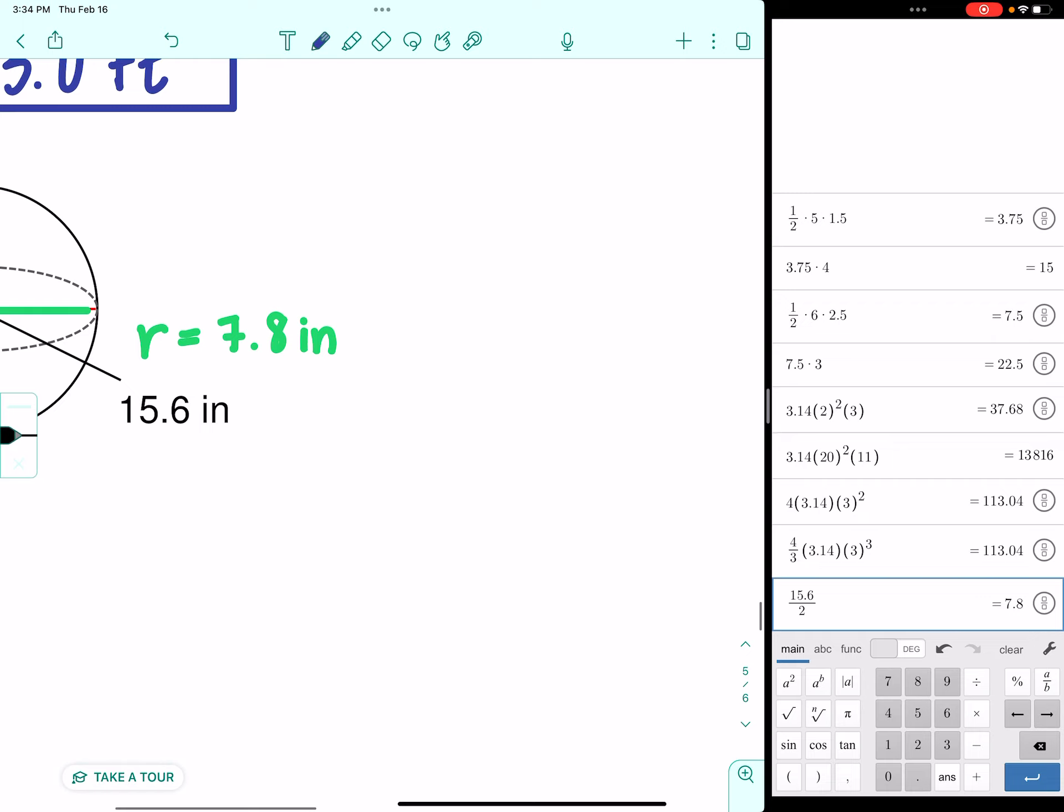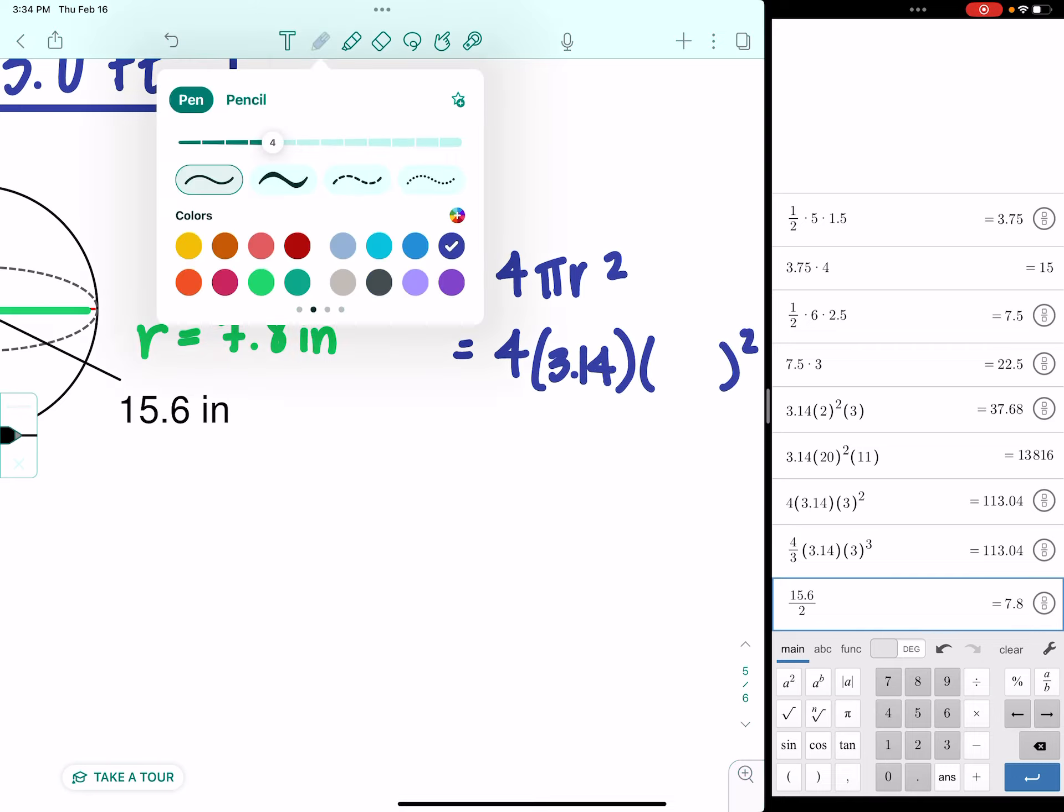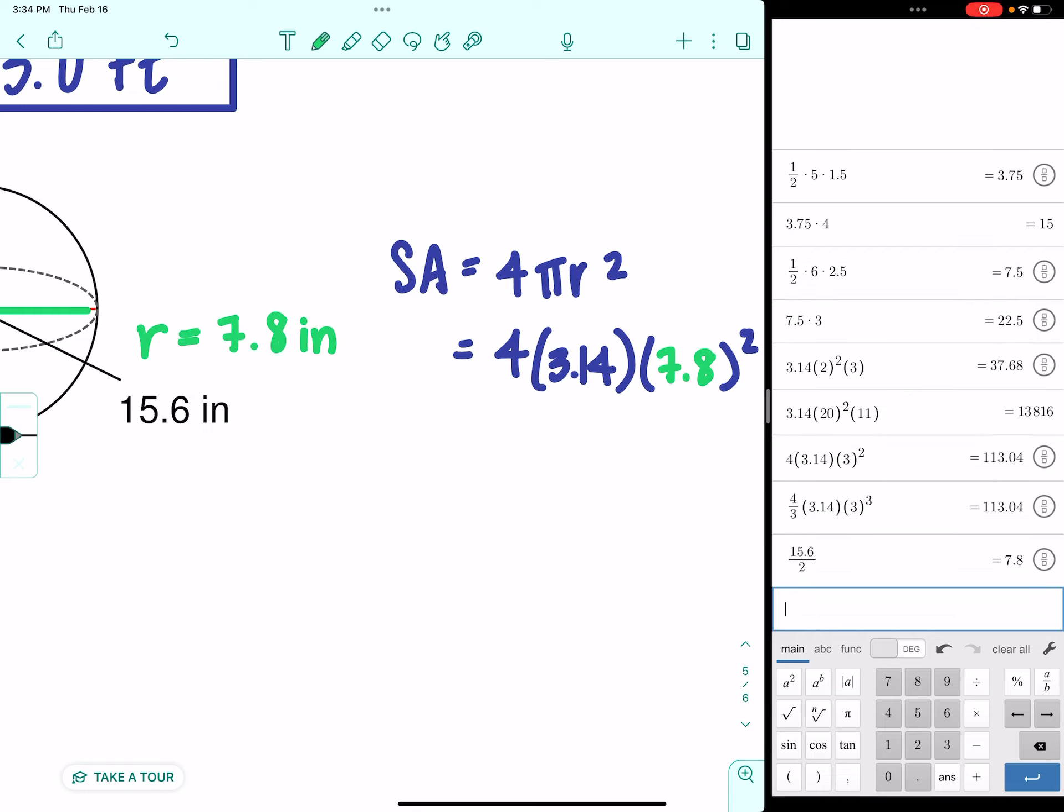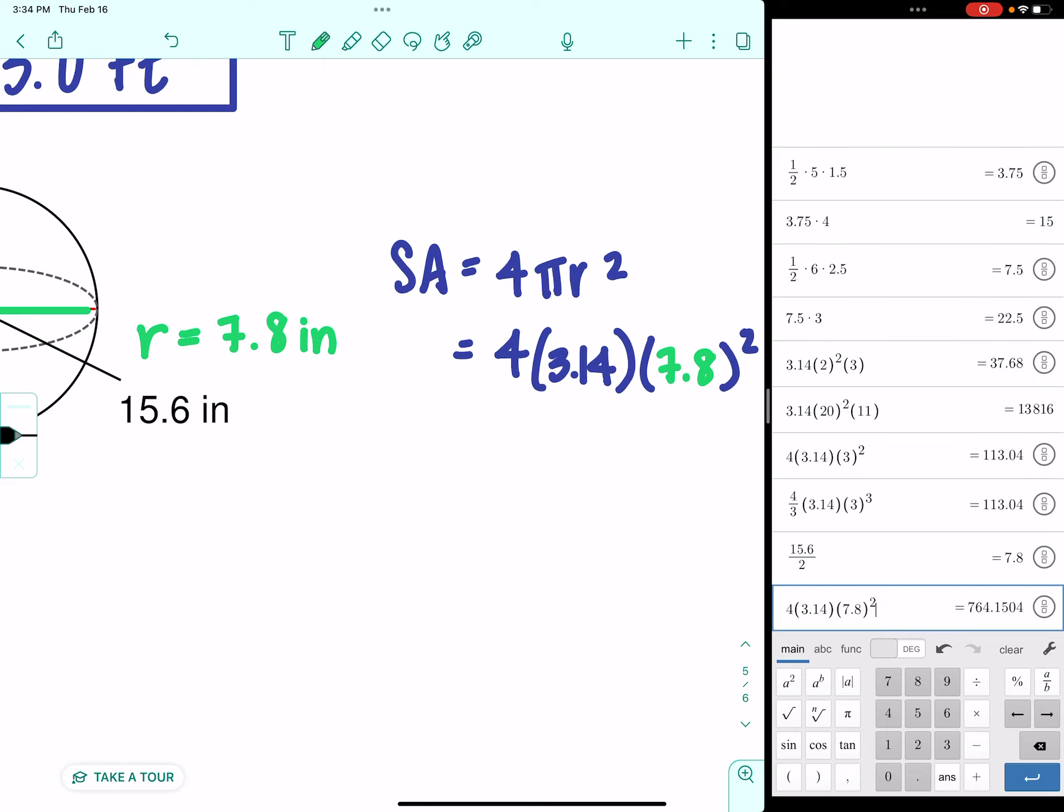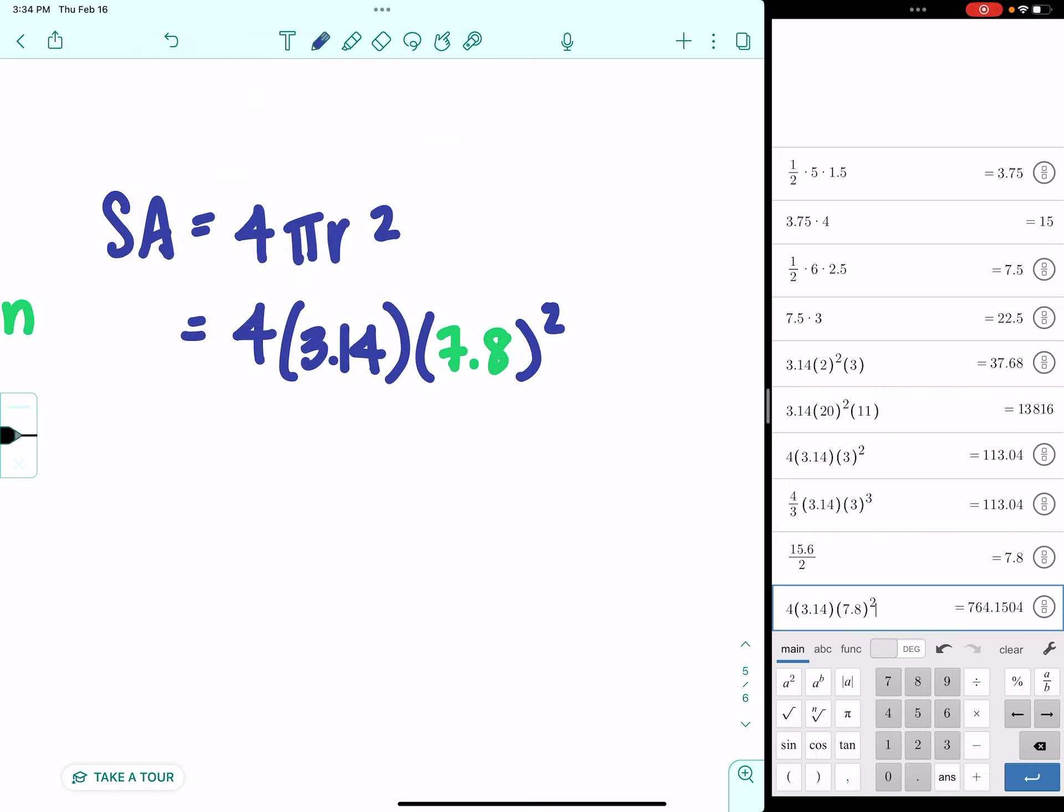Now that I have my radius, I can pull out my formulas. Surface area is 4 pi r squared. We'll use 3.14 for pi again. And for that radius, we'll substitute 7.8. 4 times 3.14 times 7.8 squared. That's a fun decimal. So, we get 764.15.